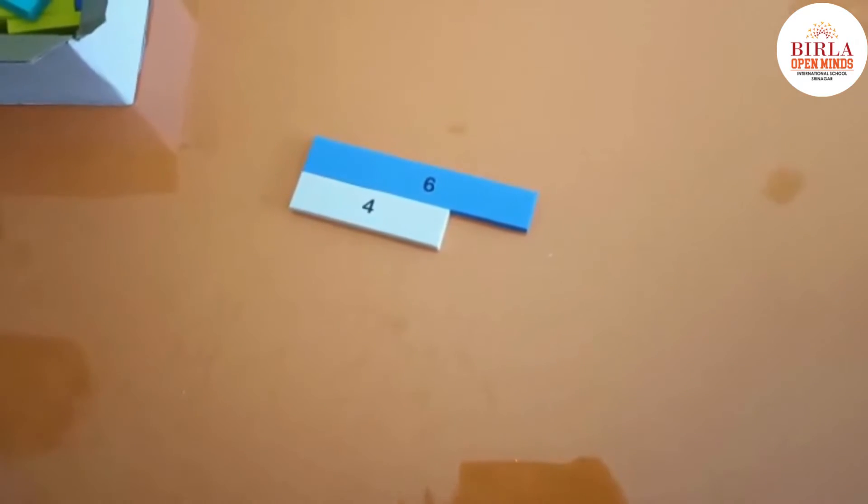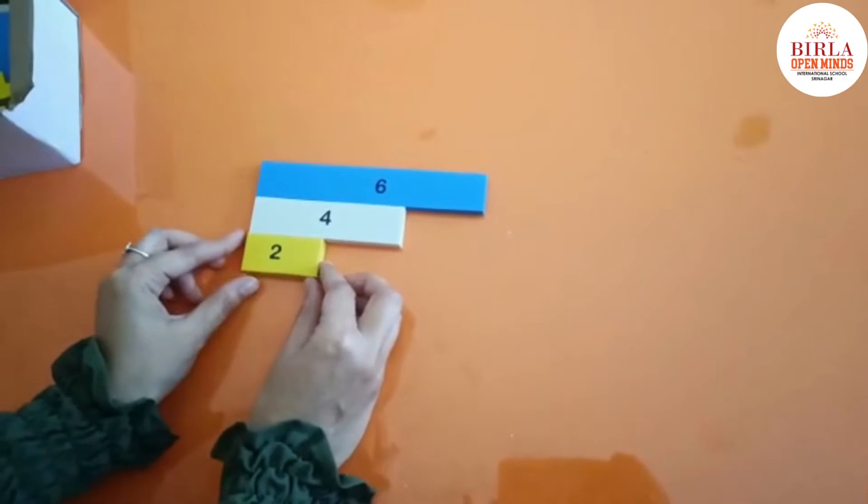Now I have to subtract these two numbers. 6 minus 4 is 2. The strip we will put over here.